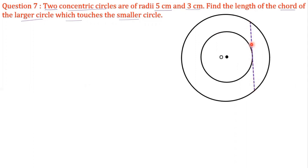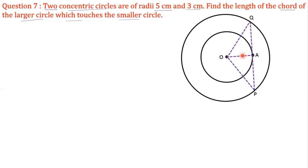For the smaller circle, the line PQ is the tangent, and for the larger circle, the line PQ is the chord. PQ is the tangent and A is the point of contact. Now join OP and OQ — they are the radii of the bigger circle — and join OA, which is the radius of the smaller circle.